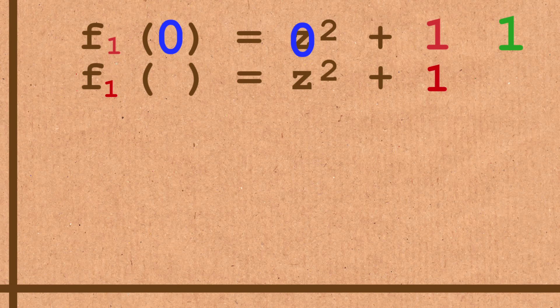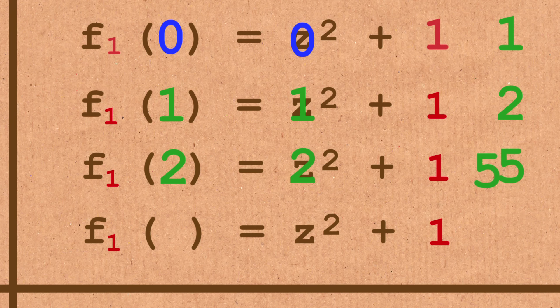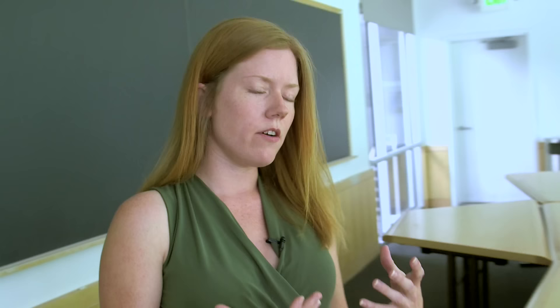Well, F one of zero is equal to zero plus one which is one. F one of one, so now I apply it to the answer that I got, this is one plus one which is two. F one of two is two squared plus one which is five. F one of five is five squared plus one which is 26, and so on. That's what I mean about the behavior of zero under iteration for a particular value of C.